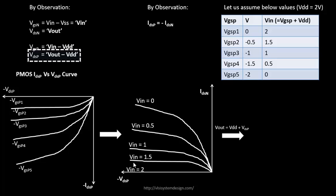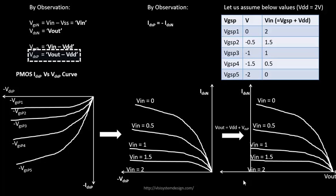The reason is simple: when Vout = 0, it means the output capacitor is completely discharged and we need to charge it. So the finite current you see is the charging current of that capacitor. On the other side, if we add VDD to VDSP = 0, Vout becomes 2 volts, and the same current appears at Vout = 2V. At Vout = 2V, the current is zero because the output capacitor is completely charged and there is no charging current flowing.